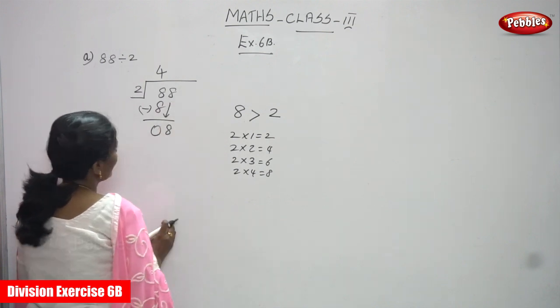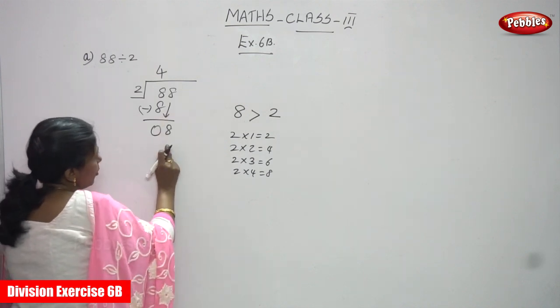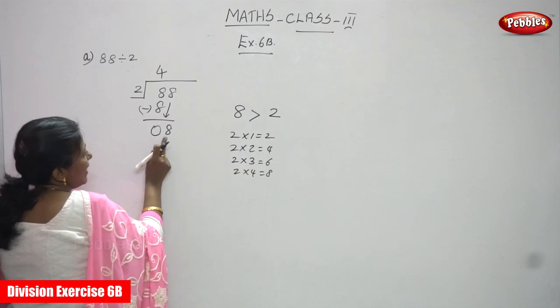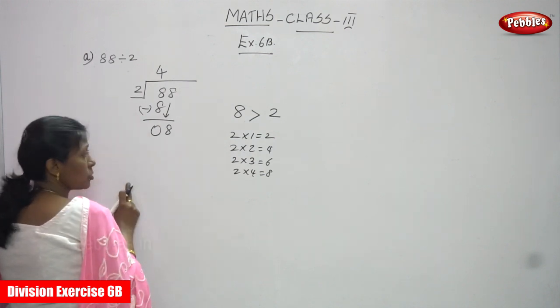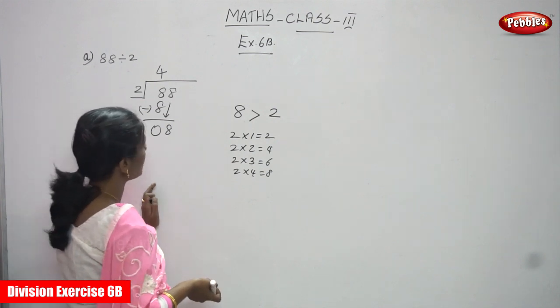Okay, so again you must use the two table up to four. Two fours are eight. So you must write four again here. So eight minus eight, you can get zero.